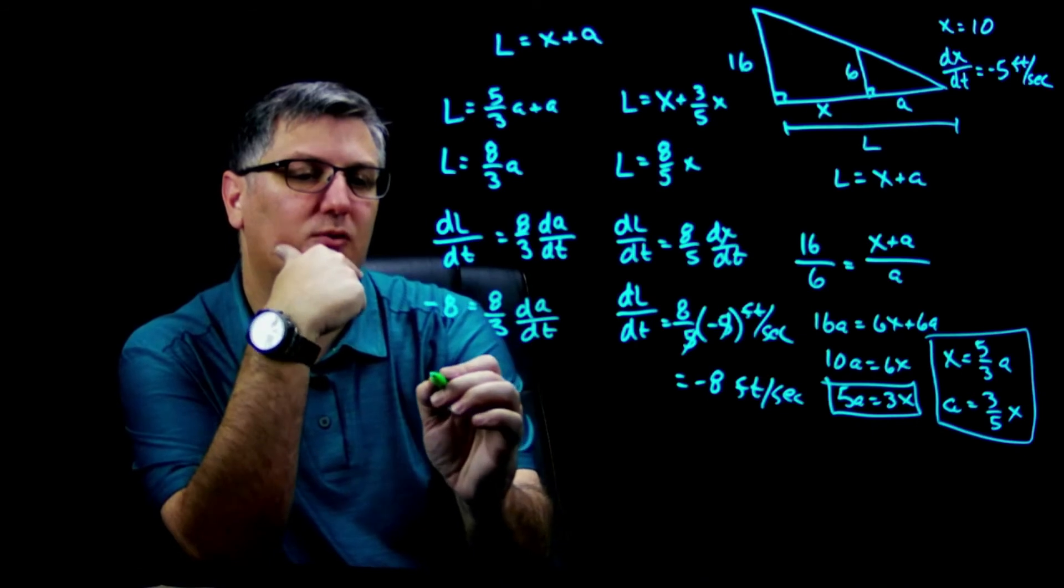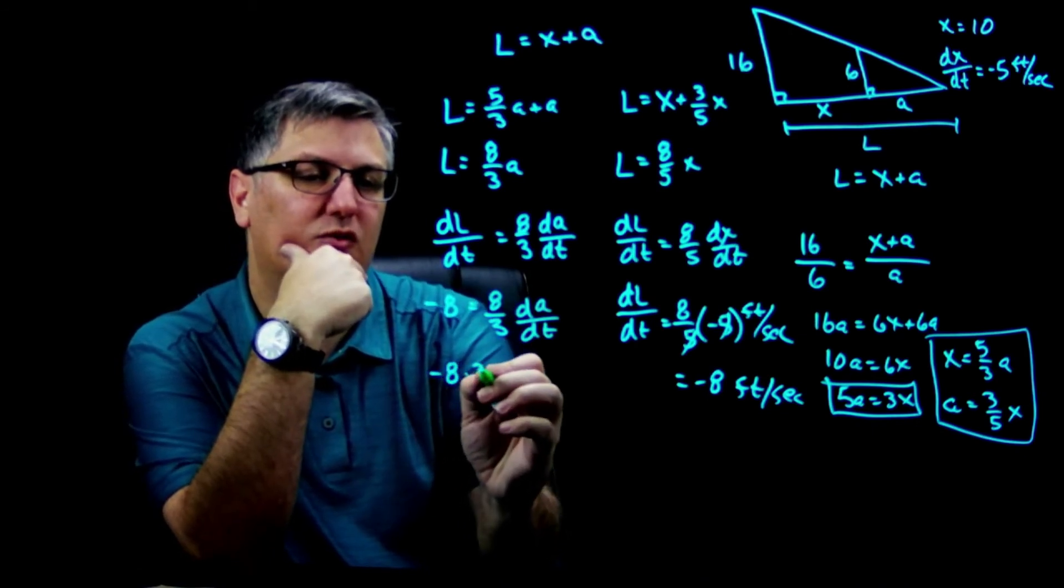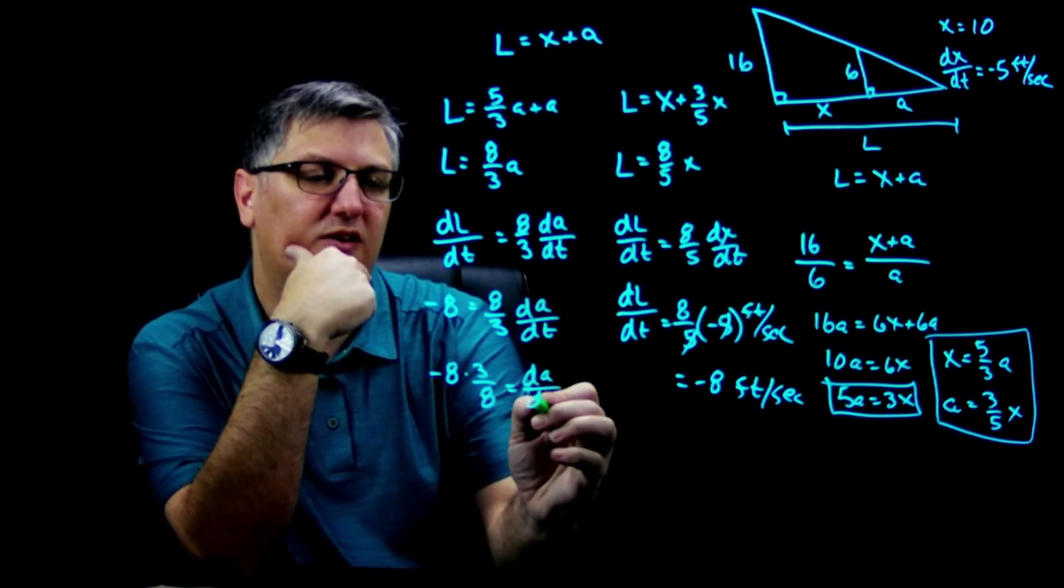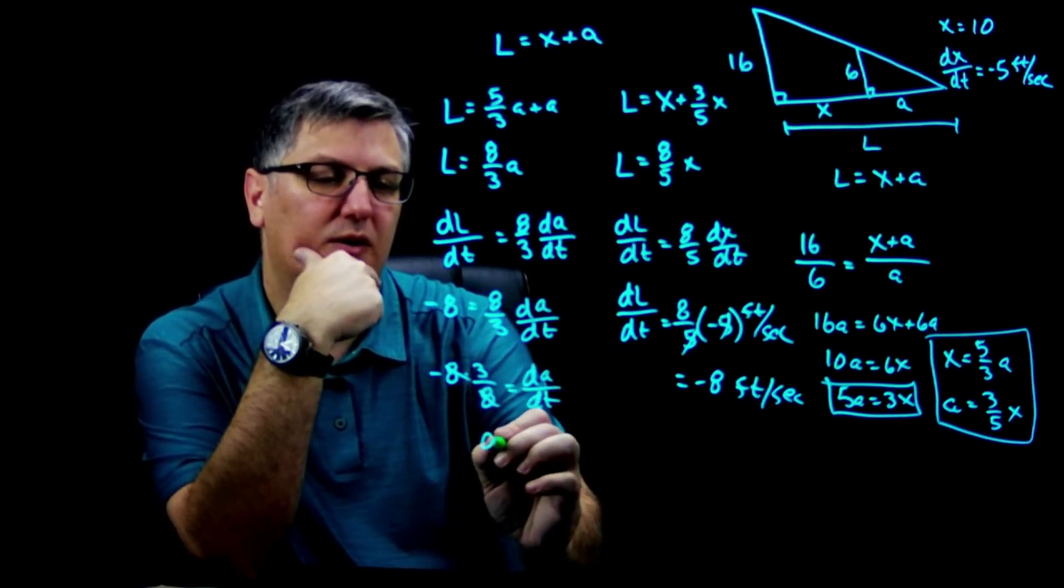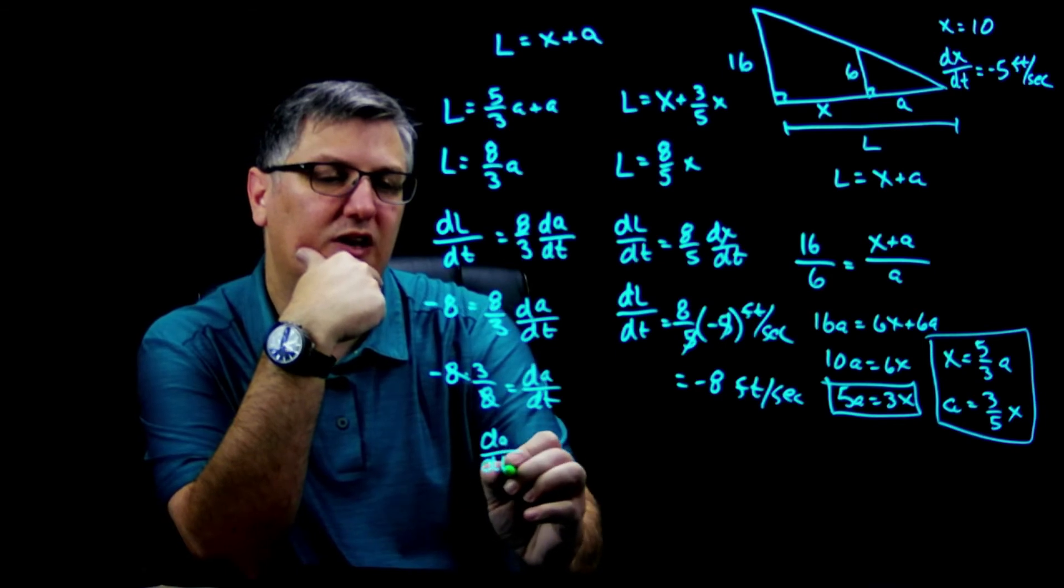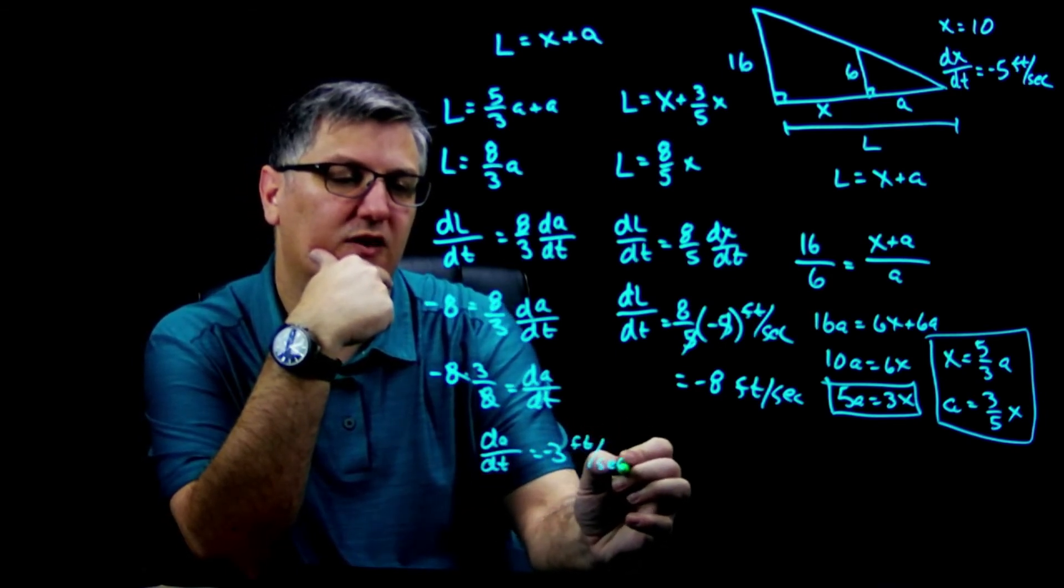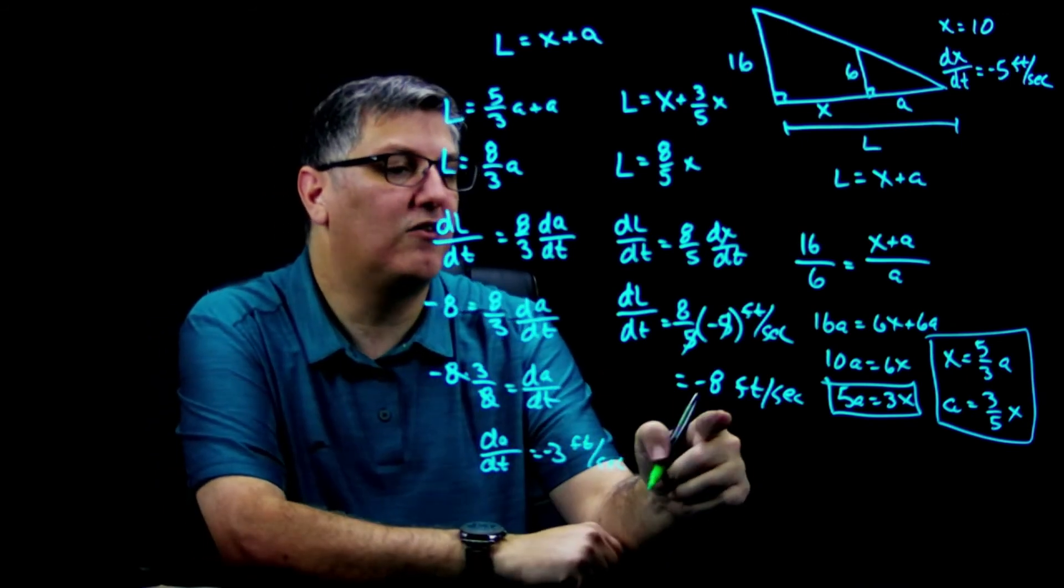Well, multiply by the reciprocal. I've got negative eight times three over eight da/dt. My eighths cancel and my da/dt is negative three feet per second.